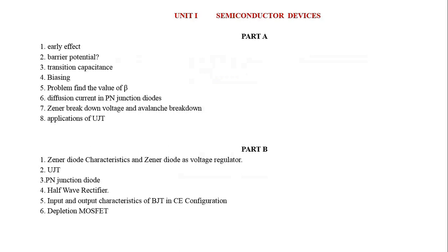Biasing — just one line definition of biasing, then one equation, and the value of beta. Sometimes the question includes one circuit and one beta value to calculate.